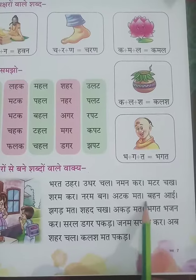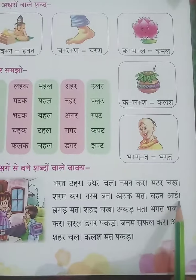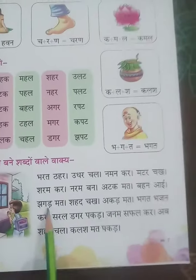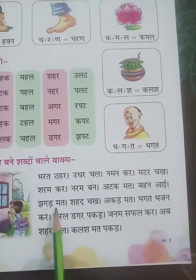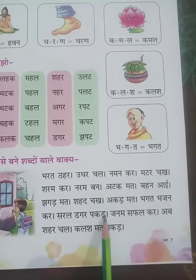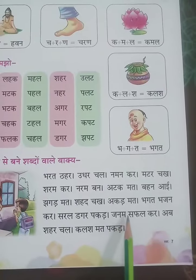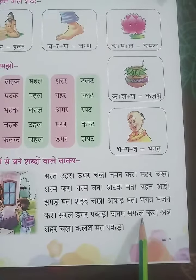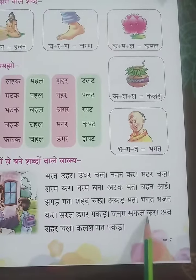Maat, Bahan, Aayi. Jagad, Maat, Shahad, Chaakh, Aakad, Maat, Bhaagat, Bhaajan, Kar, Saral, Daagar, Pakar, Janam, Safal, Kar.